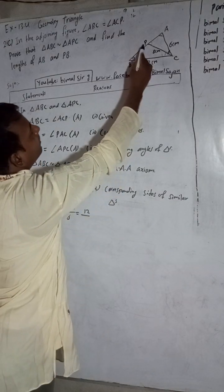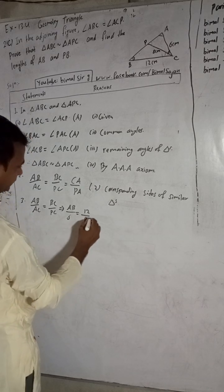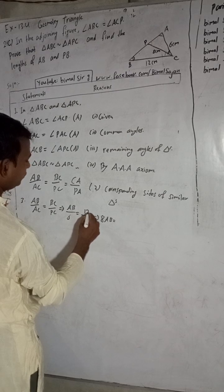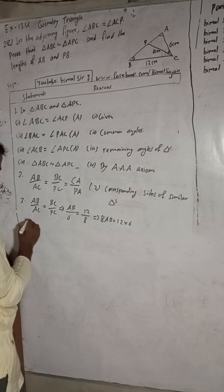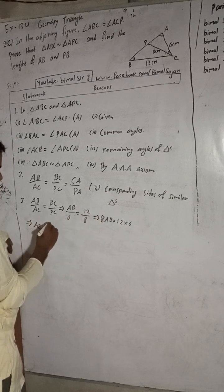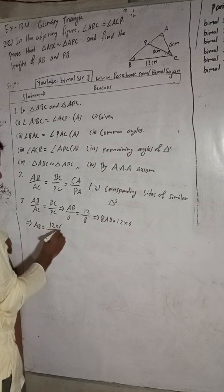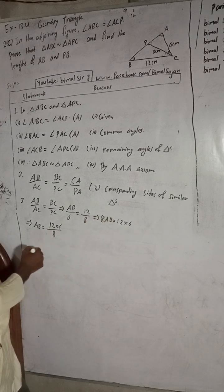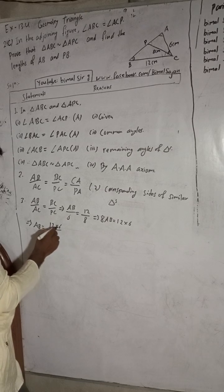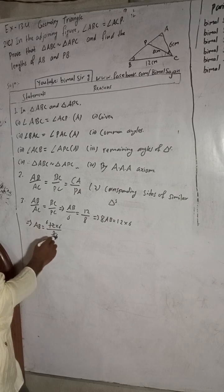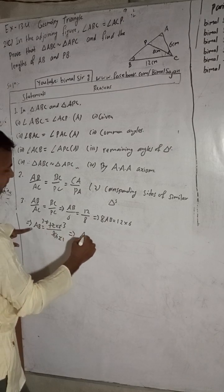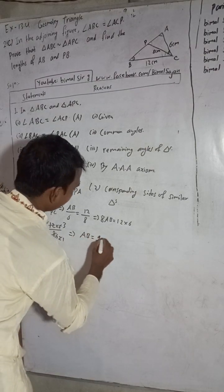PC value is 8. So when you solve this, you get 8·AB = 12 × 6. So AB = 12 × 6 ÷ 8. Don't multiply first, otherwise it will be difficult to cancel. Half of 12 is 6, half of 4 is 2, half of 6 is 3, half of 2 is 1, half of 6 is 3 — so 3×3 gives 9. AB is equal to 9 cm.